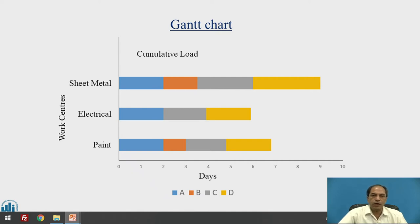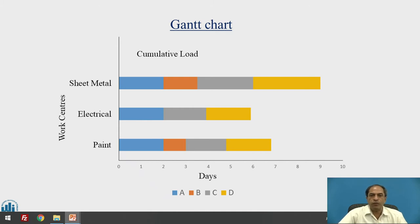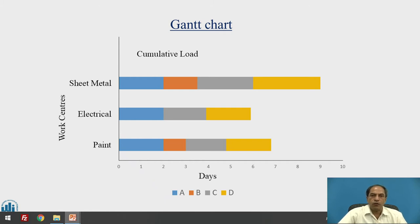In a typical Gantt chart, the x-axis represents days and the y-axis represents work centers. In the example, we consider three work centers: the painting shop, the electrical department, and sheet metal. The different colors highlight the various jobs A, B, C, and D. This chart indicates how much load is required for each operation — for example, sheet metal requires around nine days of capacity, electrical around six days, and painting around seven days.